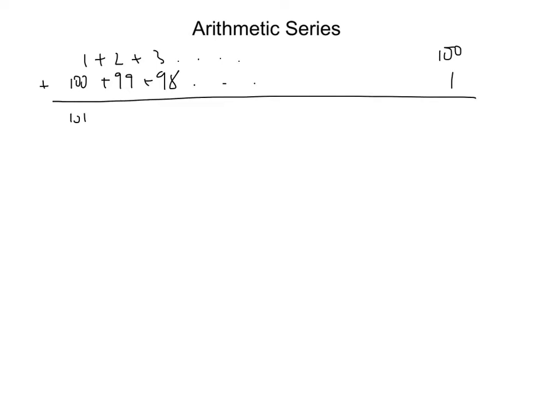He realised that each pair adds up to 101, plus 101, plus 101, all the way down to 101. He found he had 100 lots of 101. But because he had double-counted everything by adding this extra series, we can divide by 2.